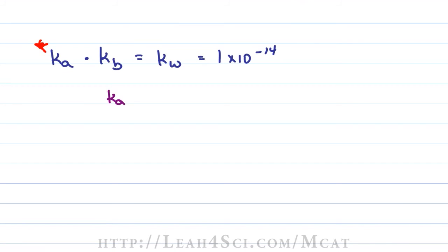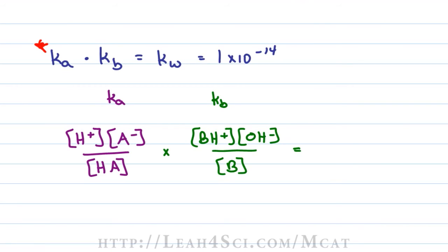The equation to know for Ka is that H plus times A minus is equal to HA. We're multiplying that by Kb which is BH plus times OH minus divided by B for base. But this just looks like an entire mess, nothing seems to relate to each other. BH plus is simply a protonated base. HA is a protonated conjugate base so it's actually the same thing and if one's in the numerator and one's in the denominator, they cancel. A minus is the deprotonated base, B is a base meaning it's deprotonated and once again they cancel leaving me with just H plus and OH minus.